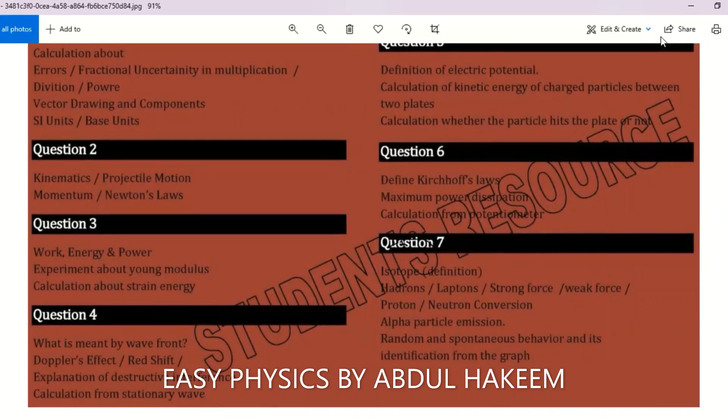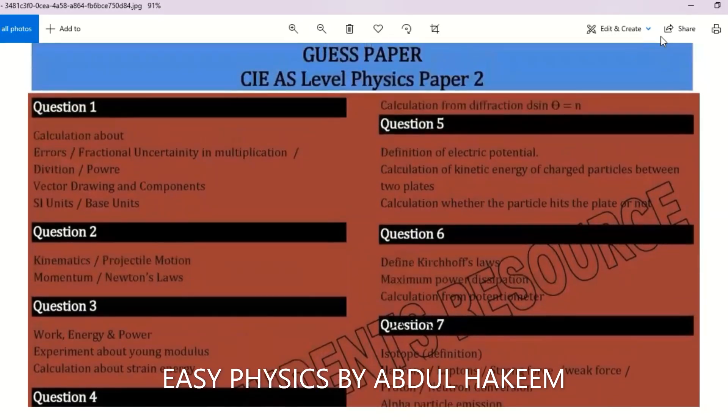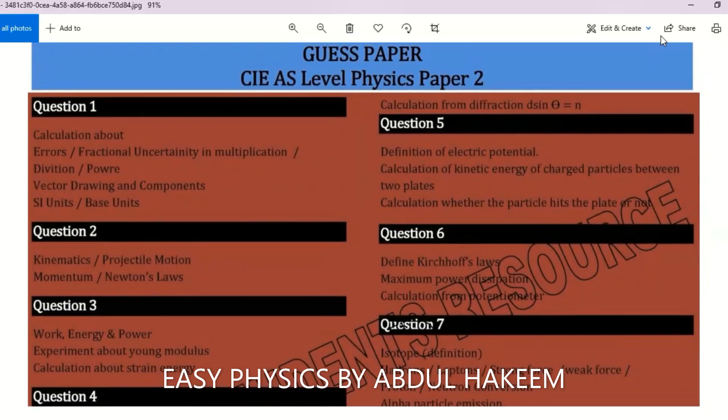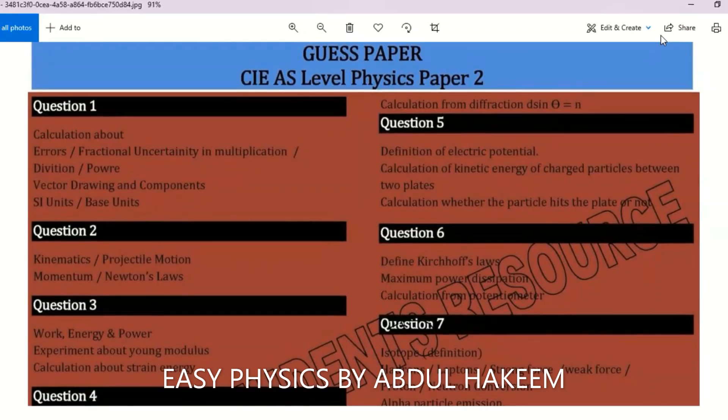Explanation of destructive interference, calculation from stationary wave. Then calculation from the formula d sin theta. For number five: definition of electric potential - work done per unit test charge to move it from infinity to a point in the electric field. Calculation of kinetic energy: half mv squared equals charge multiplied by the voltage.